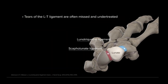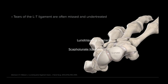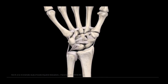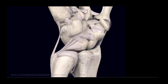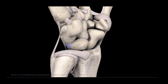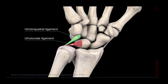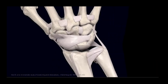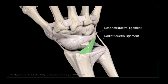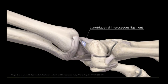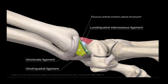Tears of the interosseous lunotriquetral ligament often go unrecognized, and they don't commonly have clinical significance when found in isolation. The clinical significance of tears becomes pronounced when intrinsic and extrinsic ligament structures of the carpus are also compromised. Ulnar-sided stability of the wrist relies on the integrity of the lunotriquetral ligament, the ulnolunate and ulnotriquetral ligaments (the cardinal ligaments), the dorsal radial triquetral and scaphotriquetral ligaments. The dorsal and volar portions of the lunotriquetral ligament blend with the volar extrinsic and dorsal radial lunotriquetral ligaments to suspend the triquetrum.